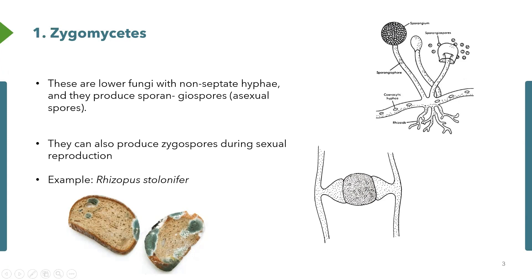However, sometimes you find that these fungi are trying to live in a very harsh environment. In such instances, we will not have asexual reproduction. We might have hyphae that come and touch each other, and they form what we call a zygospore. So sporangiospores are produced during asexual reproduction, while zygospores are produced during sexual reproduction.